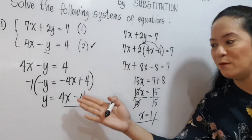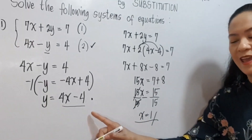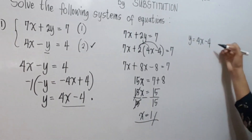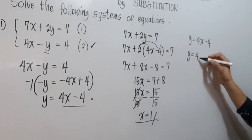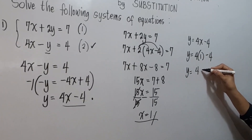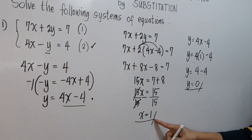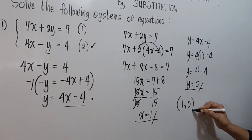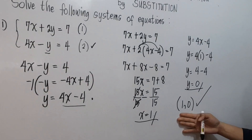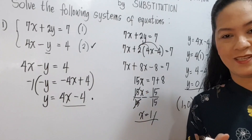To solve for y, we use the equation obtained in step 1: y equals 4x minus 4. Since x is 1, we substitute: y equals 4 times 1 minus 4, which is 4 minus 4, so y equals 0. Therefore, the solution is (1, 0). If you want to verify, you can substitute this point into both the first and second equations — if the result is true, the solution is correct.